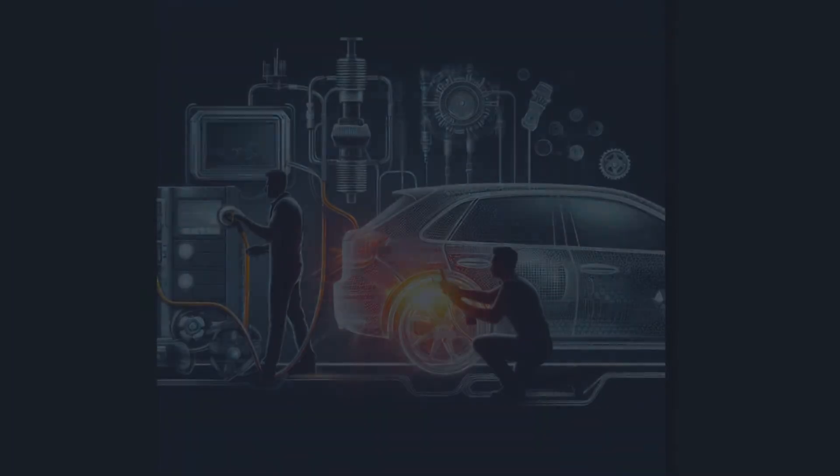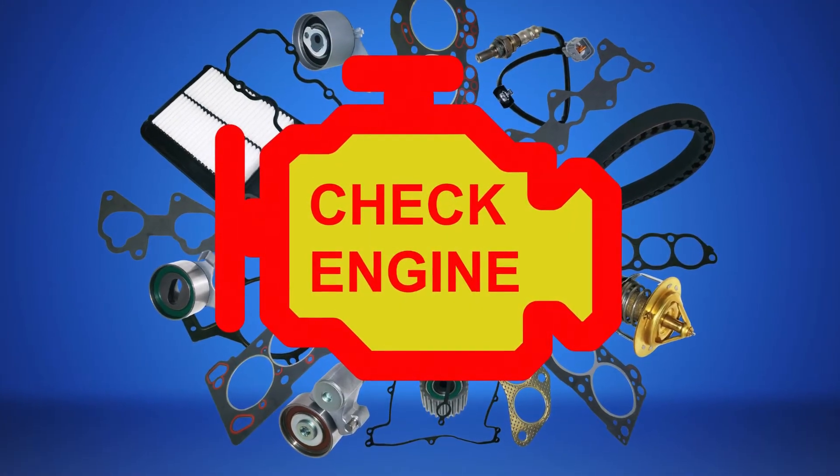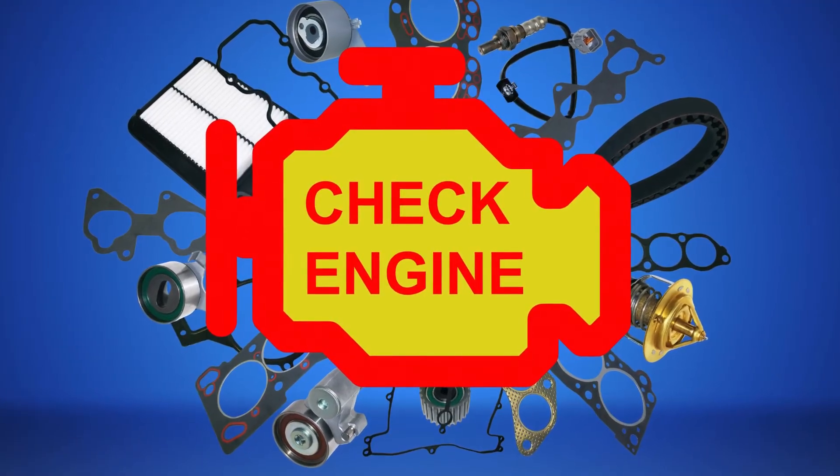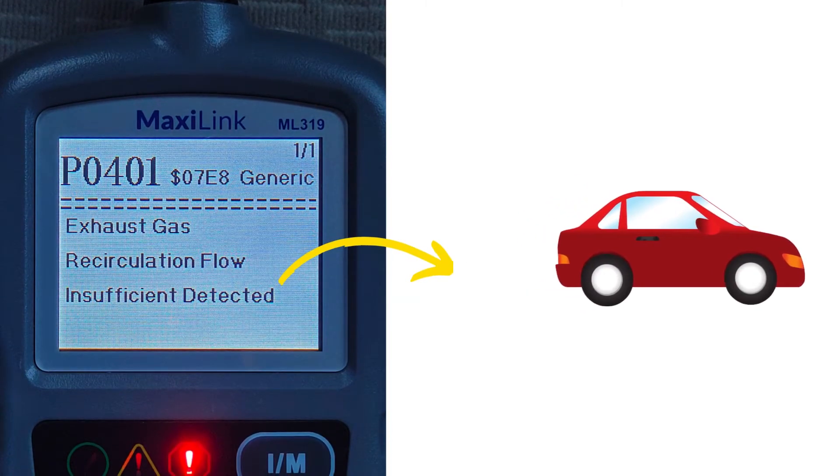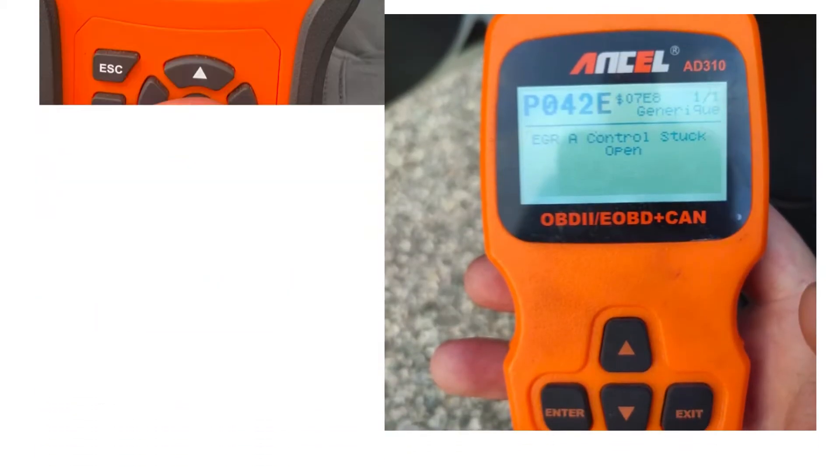Number three, failing an emissions test. One of the most common early warning signs is seeing that dreaded check engine light illuminate on your dashboard. Stored trouble codes pointing to exhaust gas recirculation faults will inevitably lead to emission system failures. Don't ignore these check engine notifications. Get the trouble codes scanned and diagnosed early.